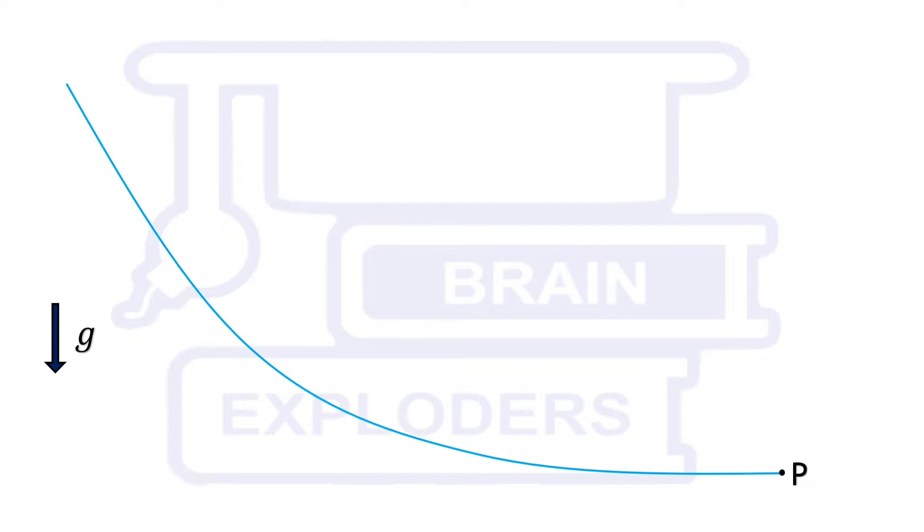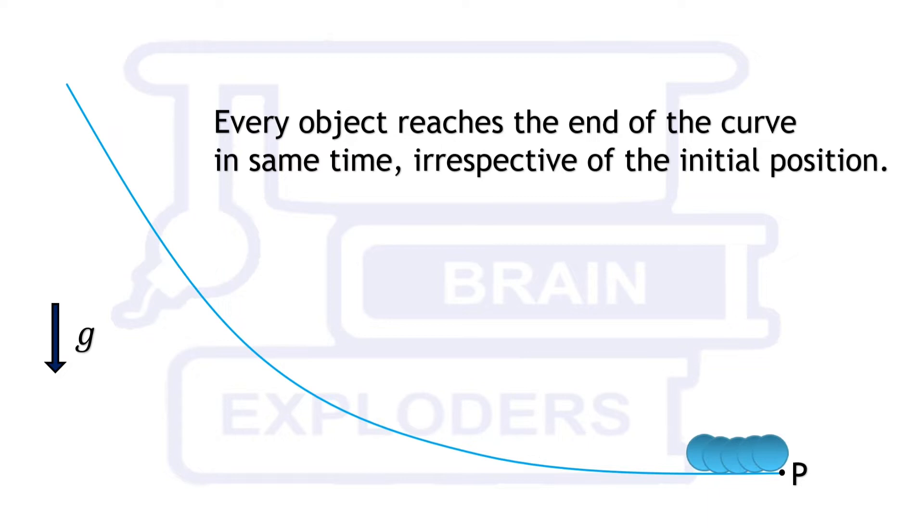it slides down under the action of gravity. The specialty of this curve is that no matter where the object is placed initially, it reaches the end of the curve in a fixed time. Today's problem is to find the equation of this curve.